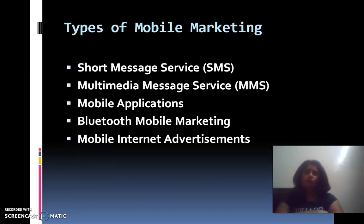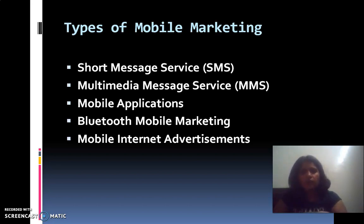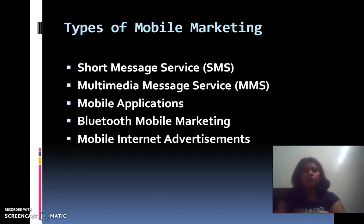Types of mobile marketing — the various ways a company can do marketing — include SMS (Short Message Service), MMS (Multimedia Message Service), and mobile applications. Various applications can be installed through which you can perform various functions. For example, Amazon, Flipkart, Zomato, Swiggy — these are apps created by different companies that you install on your mobile phone to perform various functions. You use these apps to purchase certain products.